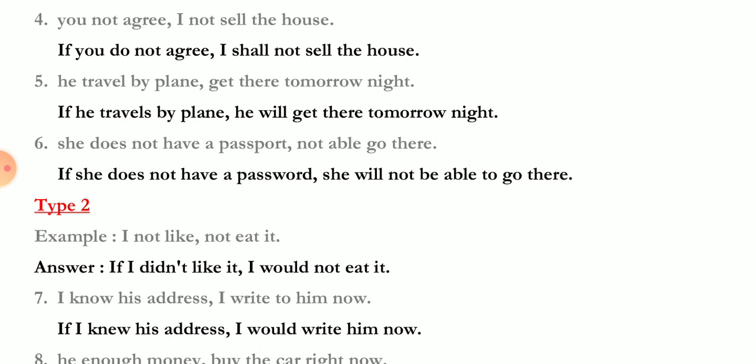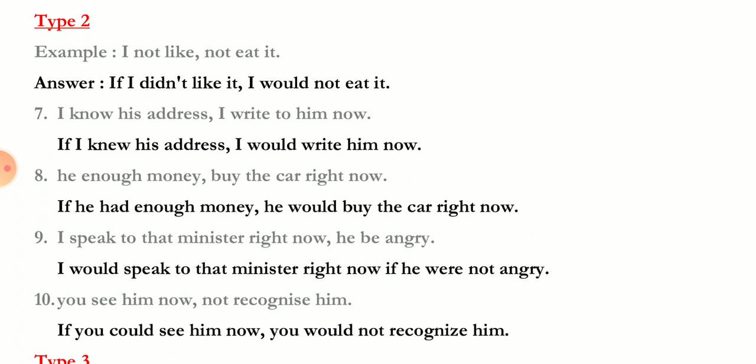Now Type 2. Example: 'I not like it / not eat it' — answer: 'If I didn't like it, I would not eat it.' In Type 2, the if-clause is in past indefinite tense and the second sentence uses 'would' plus verb first form — that is the conditional. 'I know his address / I write to him now' — 'If I knew his address, I would write to him now.' 'Knew' is simple past and 'would write' is the conditional.